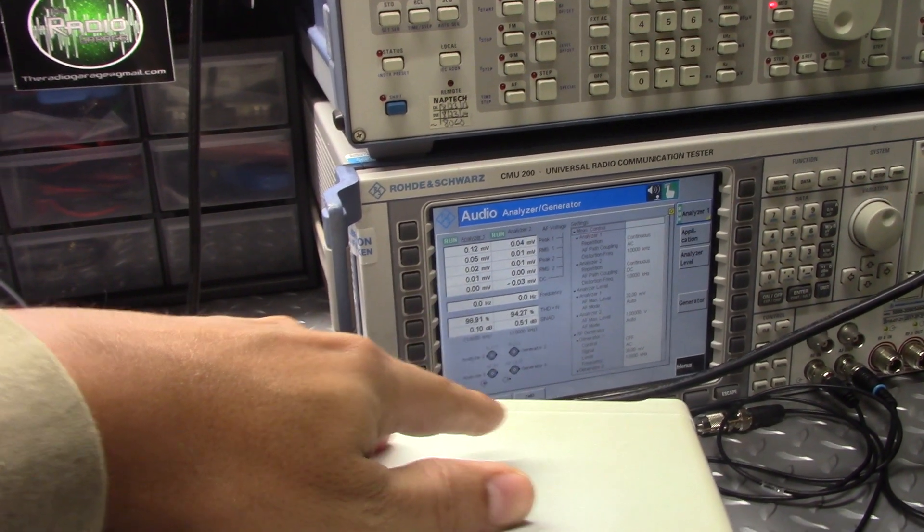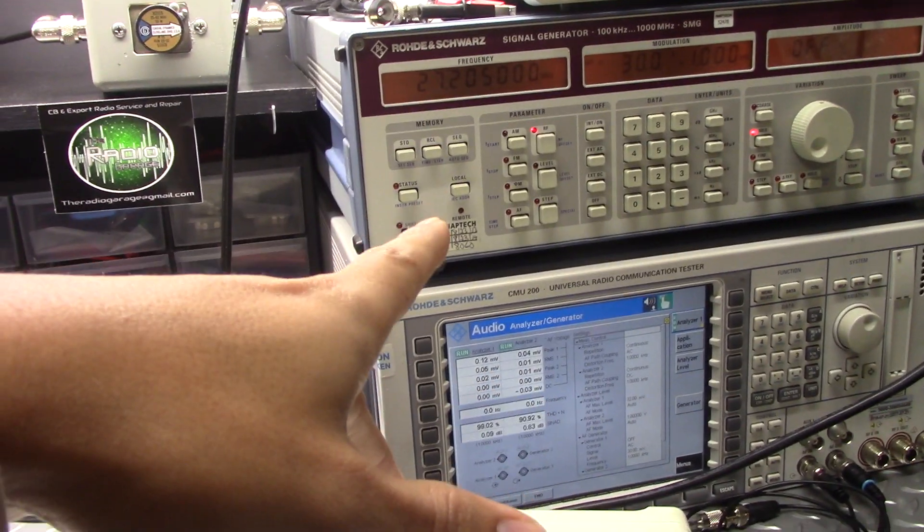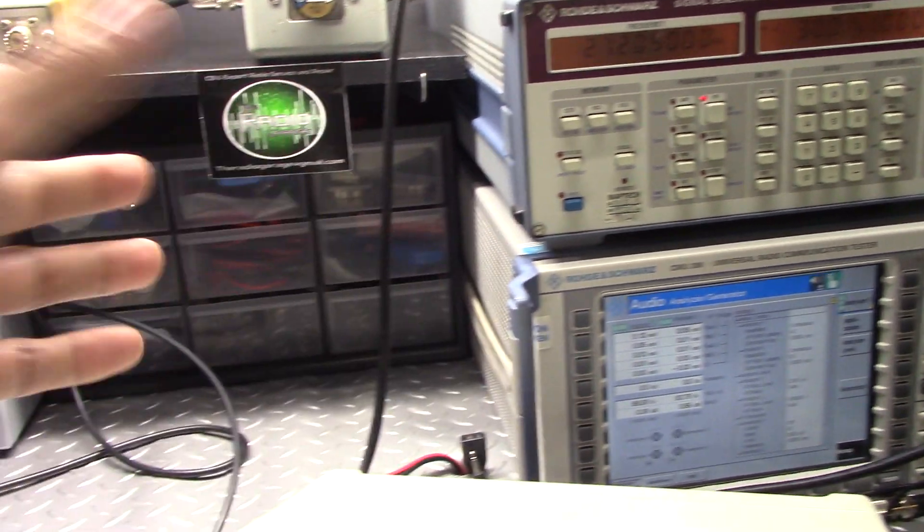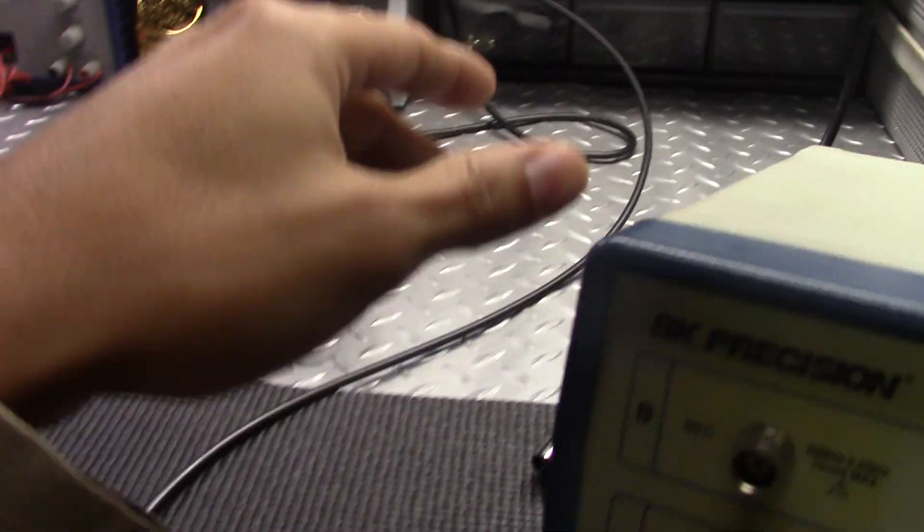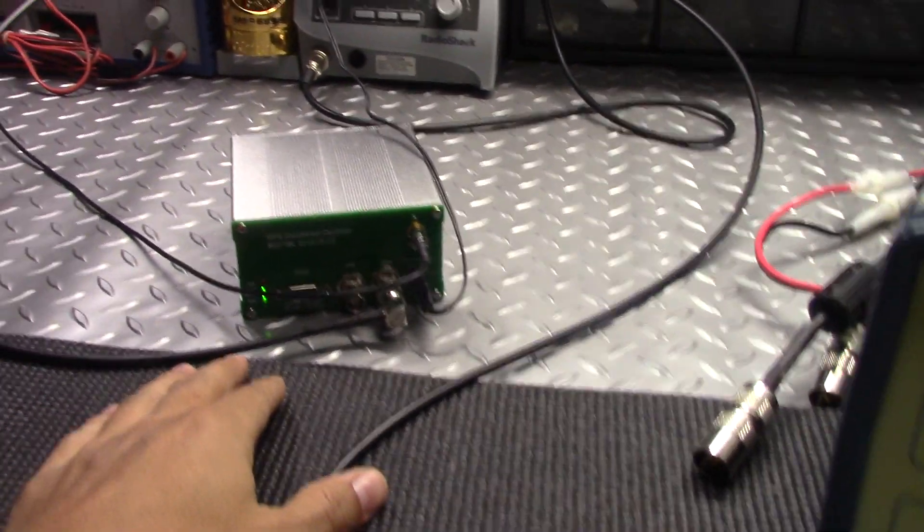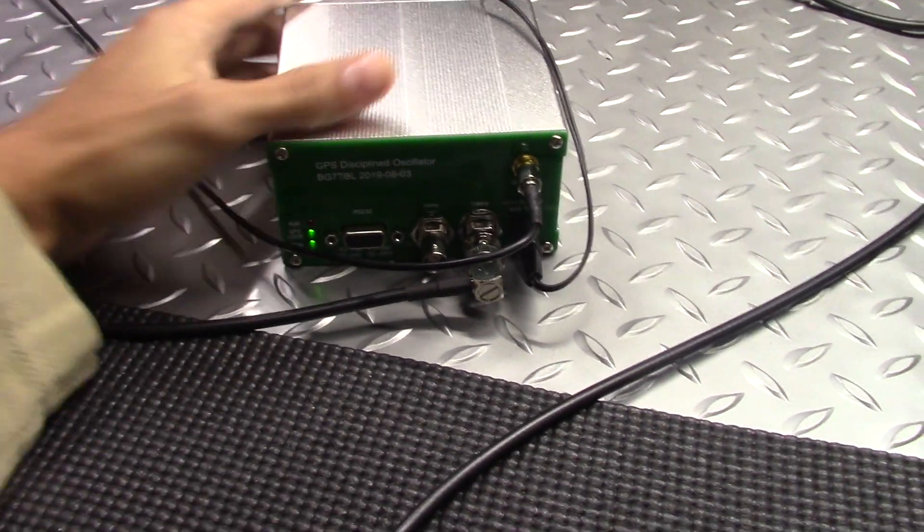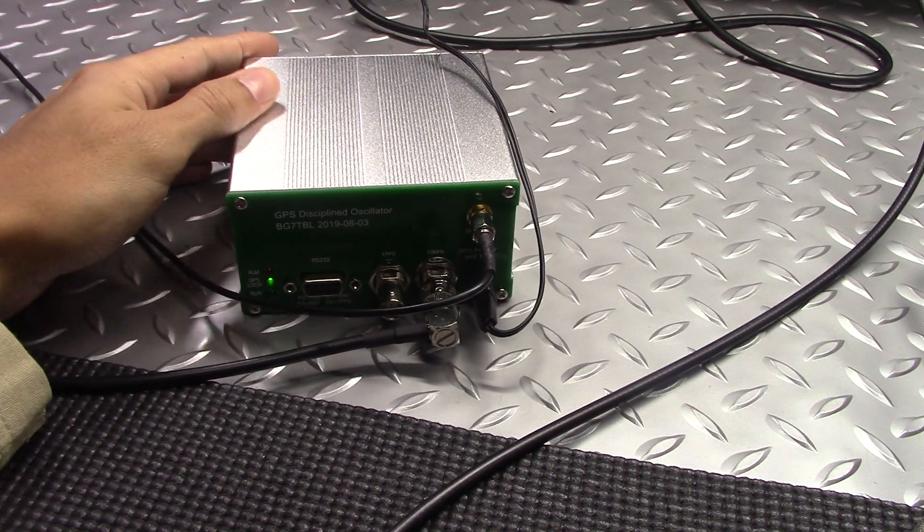It's good for checking different equipment. I could hook it up to my CMU 200 here, the comms tester. I could hook it up to my RF signal generator to check that. A bunch of different things you could do with it to keep all your equipment in line. It's just a handy piece of equipment to be on a bench, just thought I'd share it.